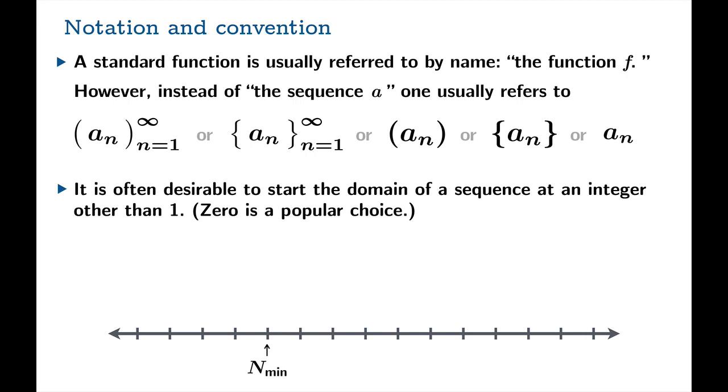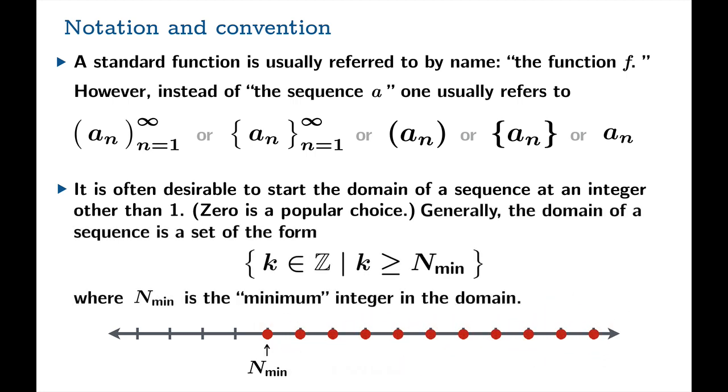So your domain for a sequence, typically what happens is here are your integers, and you pick a smallest index, a smallest argument, and your domain marches off from there. So generally, the domain of a sequence is a set that looks like this. It's all the integers that are greater than or equal to some sort of minimum argument or index.